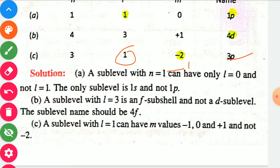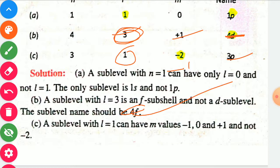Summary of corrections: For the first case, l should be 0 (not 1) and the name should be 1s (not 1p). For the second case, l and m values are correct but the name should be 4f (not 4d) since l equal to 3 indicates f sub-shell. For the third case, m should be minus 1 (not minus 2); the name 3p is correct.